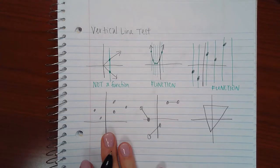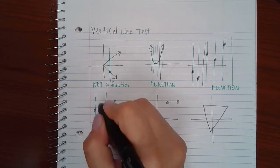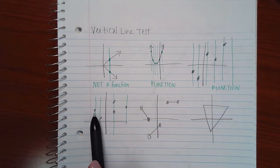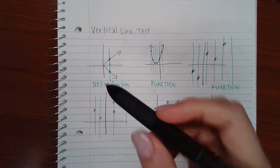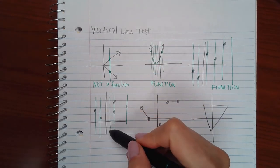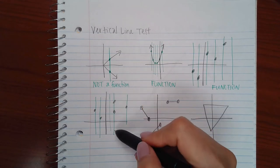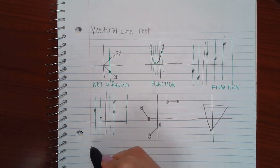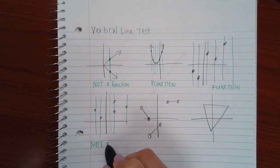Notice here, if I draw vertical lines, what do we have? This vertical line is only getting touched once. This vertical line is only getting touched once. This vertical line, not at all. This vertical line, though, is getting touched twice. And when that happens, it is not a function.